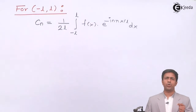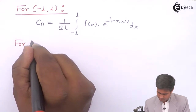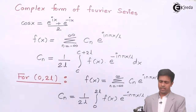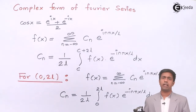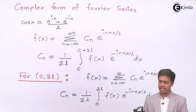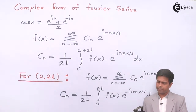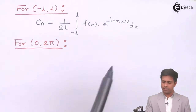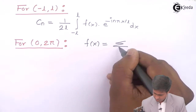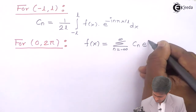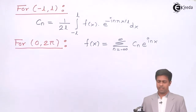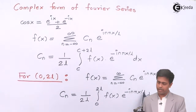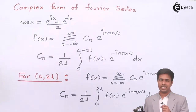The third range we encounter in numericals is 0 to 2π. For this range, we take the formula for 0 to 2l and substitute l = π. With l = π, the π terms cancel in the exponent, giving f(x) = summation of cₙ e^(inx). For cₙ, substituting l = π gives: cₙ = (1/2π) × integral from 0 to 2π of f(x) · e^(−inx) dx, where π and π cancel.